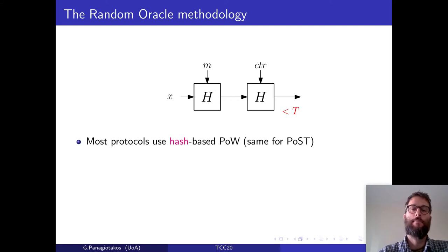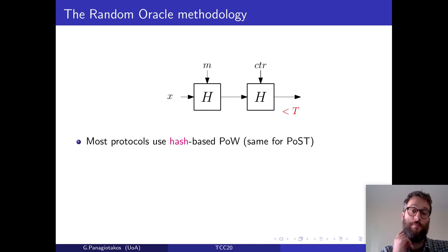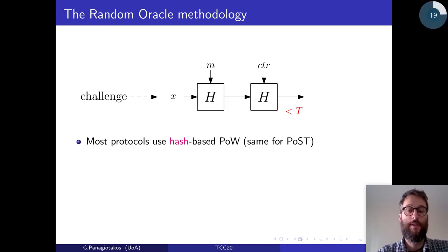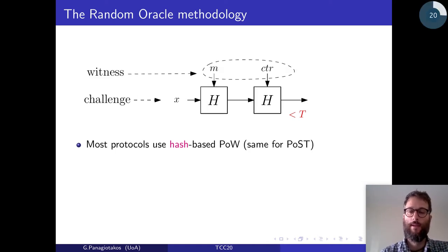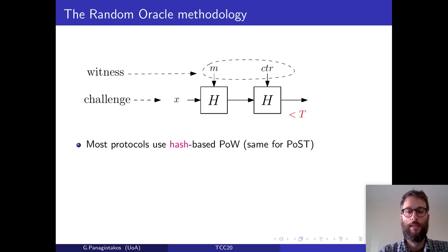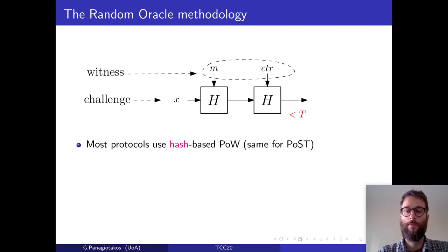As an example, I'll describe the construction used by Bitcoin. In this construction, parties first receive a challenge string X, and they seek to find a witness consisting of two parts: a message and a counter. A proof of work of this type is valid if hashing the challenge with a message, and then hashing again with a counter, produces a string that is smaller than some target T.